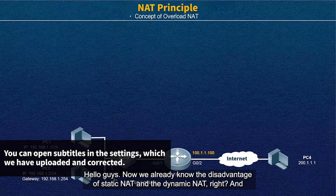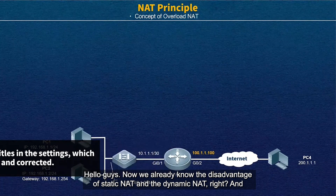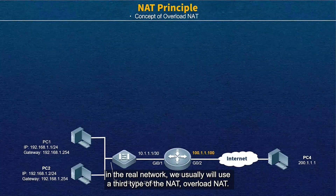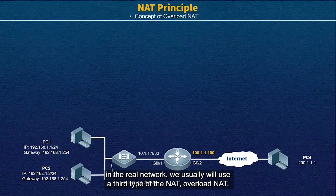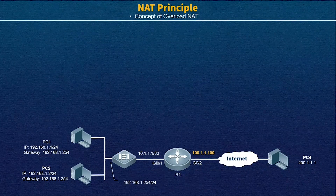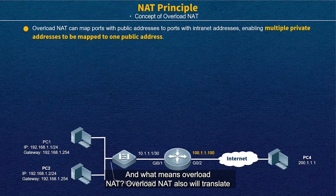Hello guys. Now we already know the disadvantages of static NAT and dynamic NAT. In the real network, we usually will use the third type of NAT: overload NAT. What does overload NAT mean?